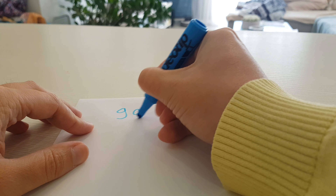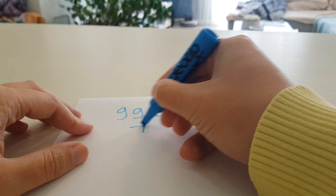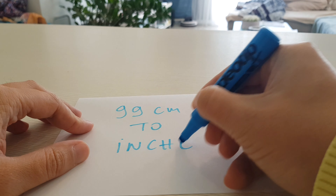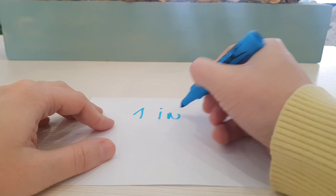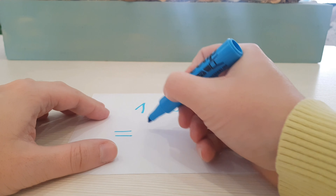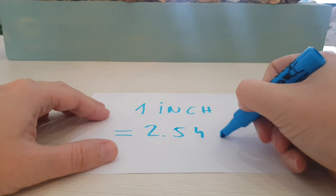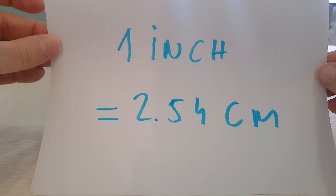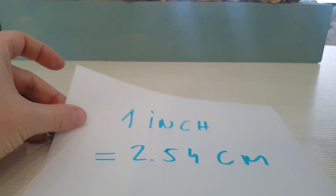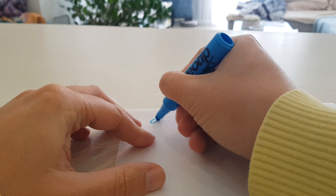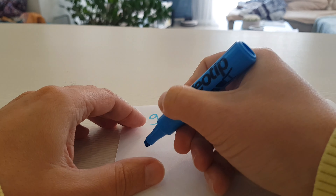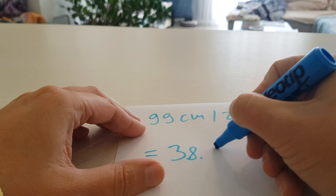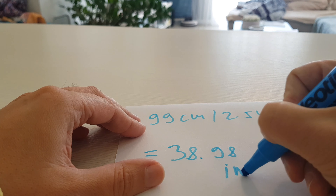In this video I will show you how to convert 99cm to inches. Here is the formula: 1 inch equals 2.54cm. We divide 99cm by 2.54cm and the result is 38.98 inches.